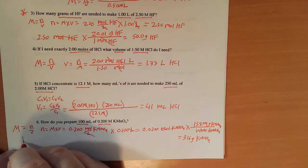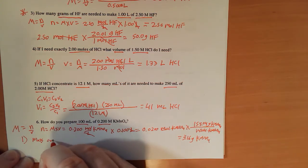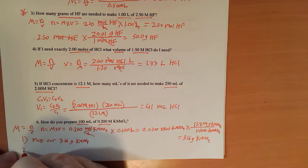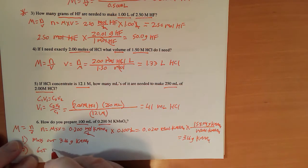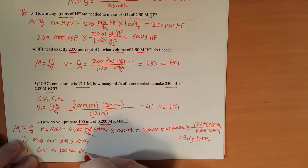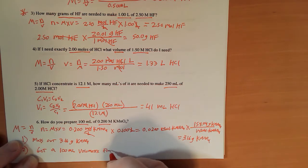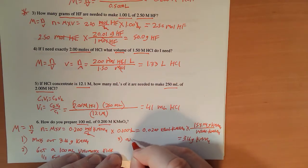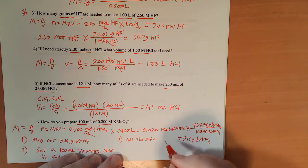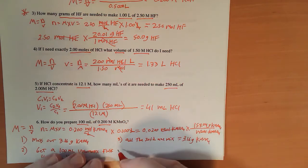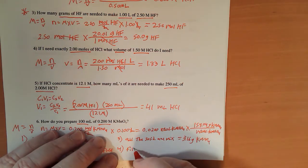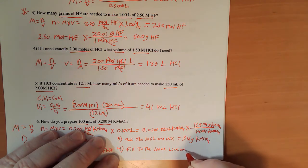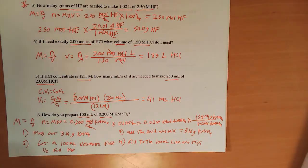One, I need to mass out 3.16 grams KMnO4. Two, I need to get a 100 milliliter volumetric flask, half full of water, and that would be distilled water. Three, add the solid and mix. And then four, fill to the 100 milliliter line and mix. And those are the steps I would actually go through to prepare this solution.